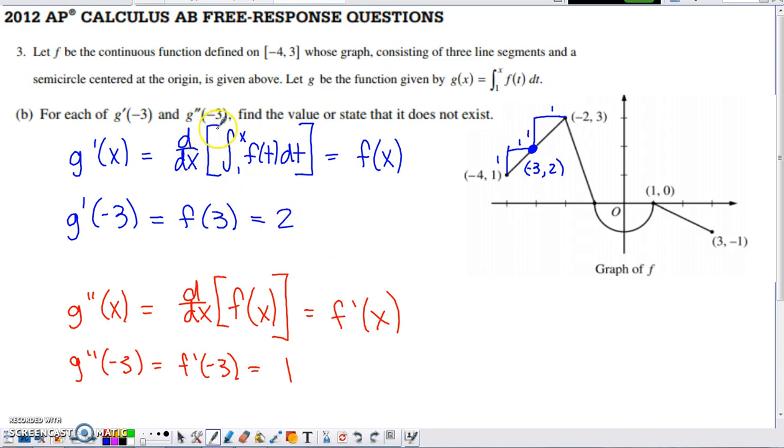I also wanted to find g double prime of negative 3, so g double prime of X. If I take the derivative of this, I end up with f prime of X. So g double prime of X is equal to f prime of X, and g double prime of negative 3 is equal to f prime of negative 3. f prime of negative 3 is the slope of the tangent line to f at this location. This location is a spot on f where we have a line segment showing up, so the slope of the tangent line to the line segment is just the slope of the line itself. Rise of 1, run of 1, rise of 1, run of 1. 1 over 1 obviously gives us the slope of 1.